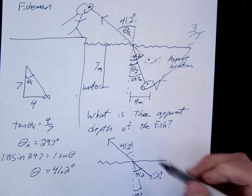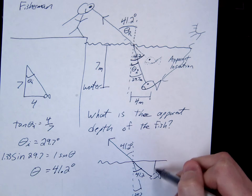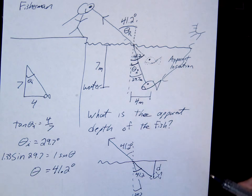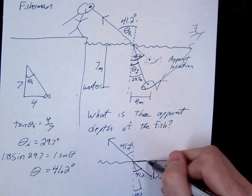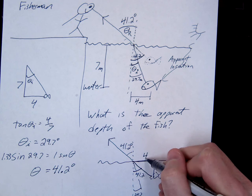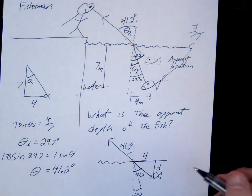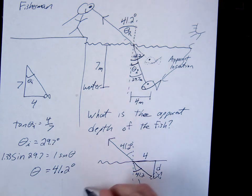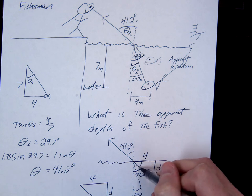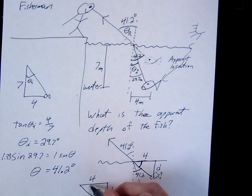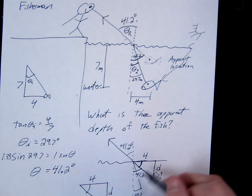All right, so remember, we're ultimately looking for this depth, D. We're looking for this depth, D, and we already knew this distance was given to be 4. So we just want to solve our triangle here. This is D. This is 4. If this is 41.2, what's this angle right here? 90 minus that, right?